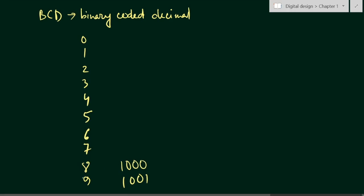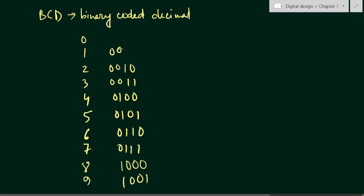Using 4 binary digits: 7 is 0111, 6 is 0110, 5 is 0101, 4 is 0100, 3 is 0011, 2 is 0010, 1 is 0001, and 0 is 0000. These are the BCD representations. On the left side we have the decimal numbers, and on the right side we have the binary coded decimal numbers — each decimal digit is coded in binary.